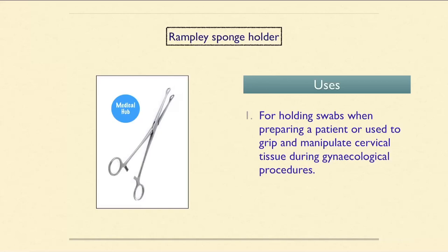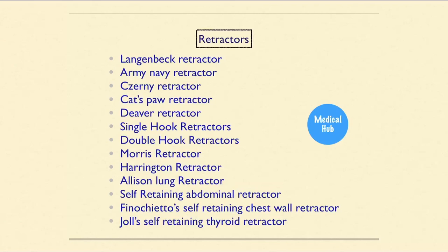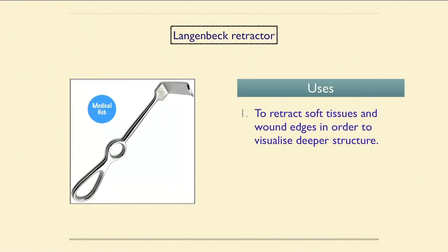Now we will discuss retractors: Langenbeck retractor, Army Navy retractor, Journey retractor, Cat's Paw retractor, Diver retractor, single hook, double hook, Morris retractor, Harrington retractor, Allison lung retractor, self-retaining abdominal retractor, Finochietto's self-retaining chest wall retractor, and Joël's self-retaining thyroid retractor. The Langenbeck retractor is used to retract soft tissues and wound edges to visualize deeper structures.